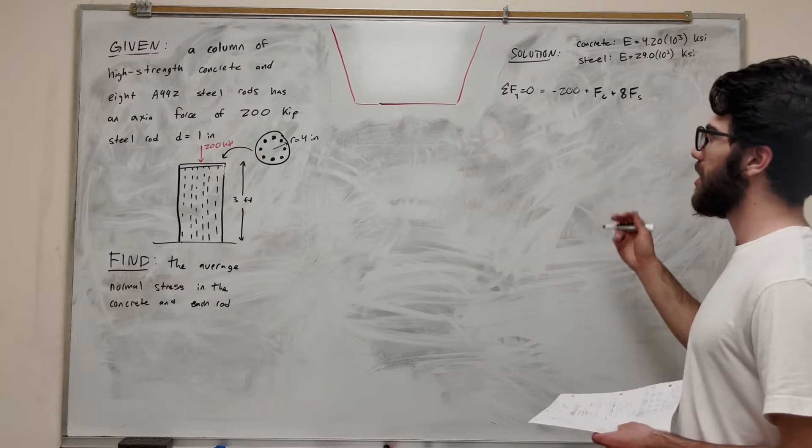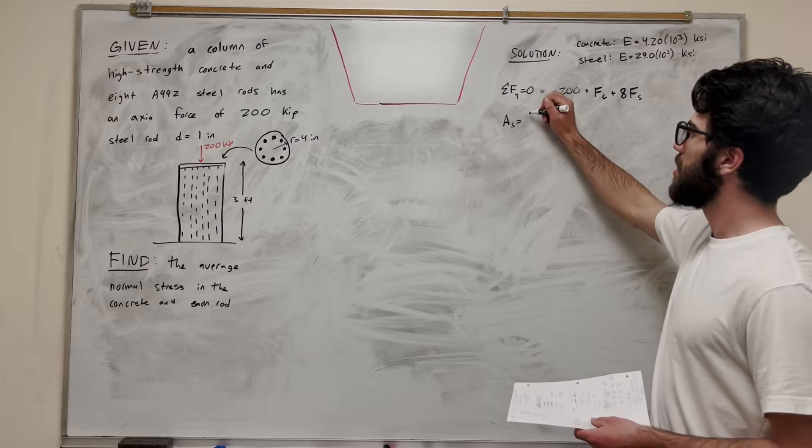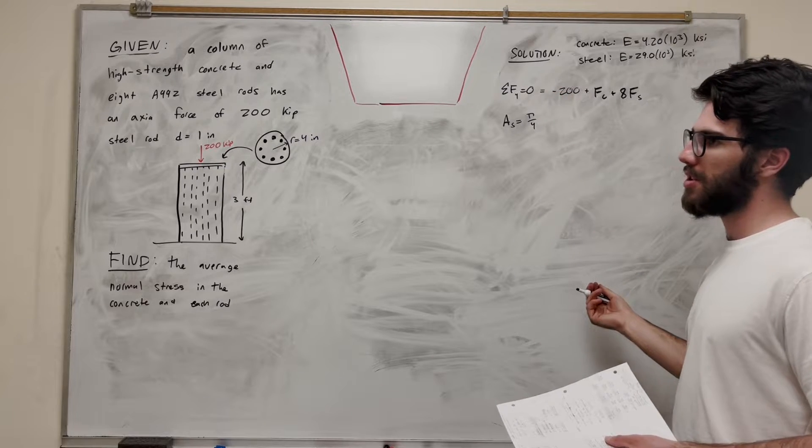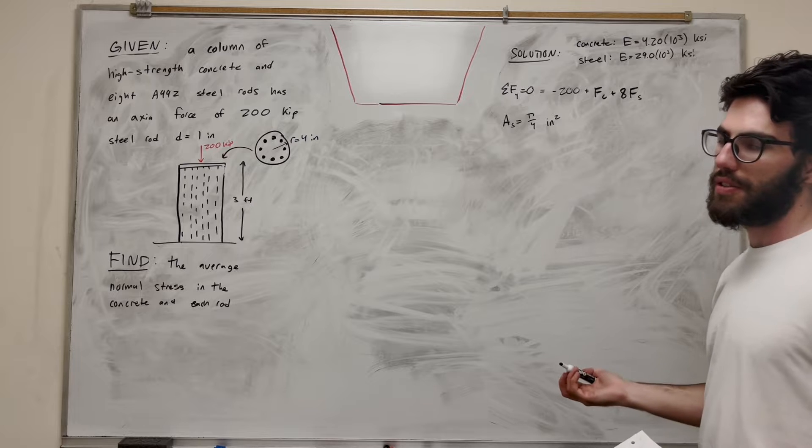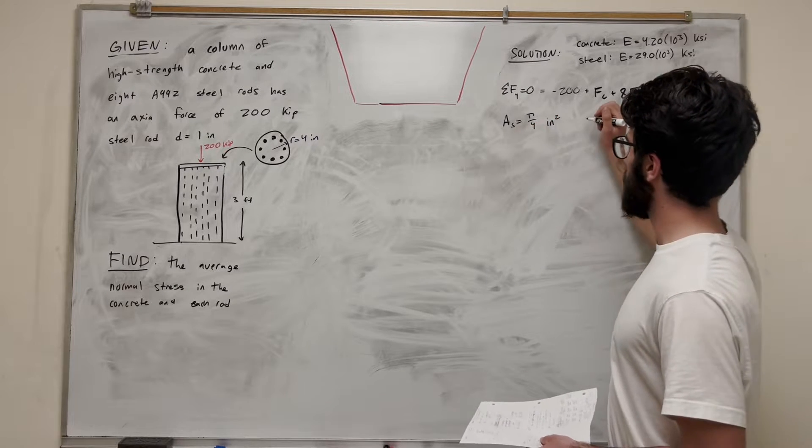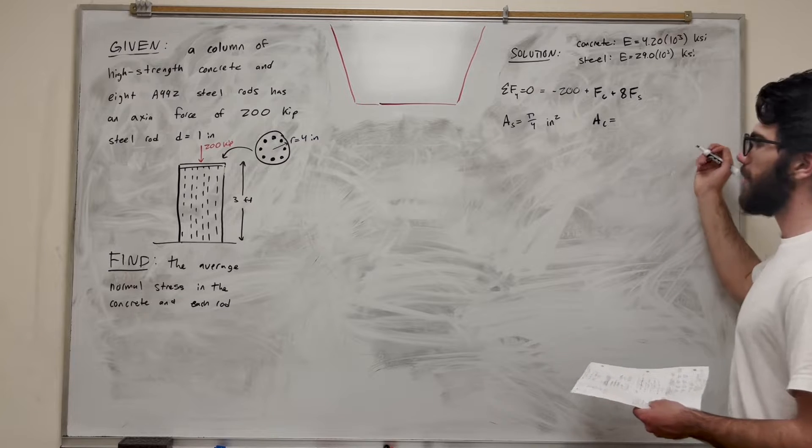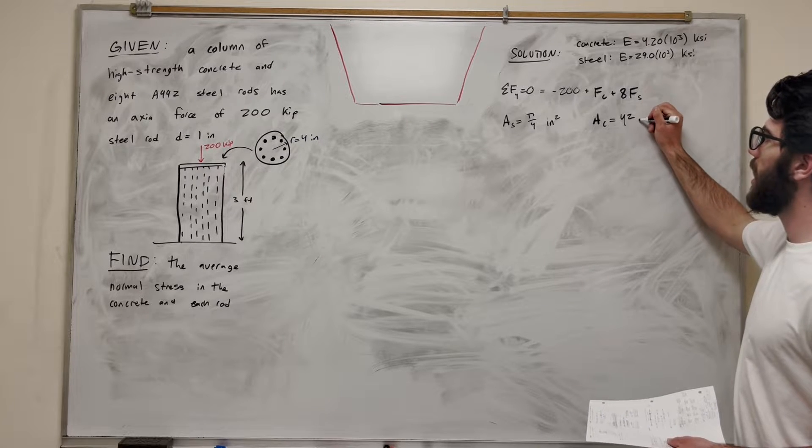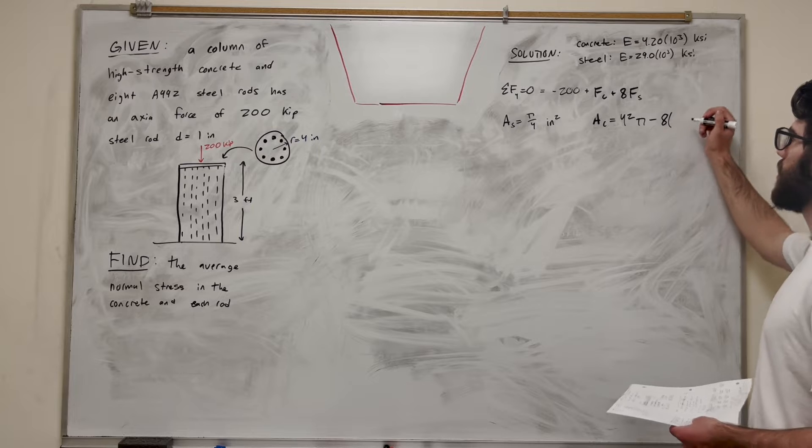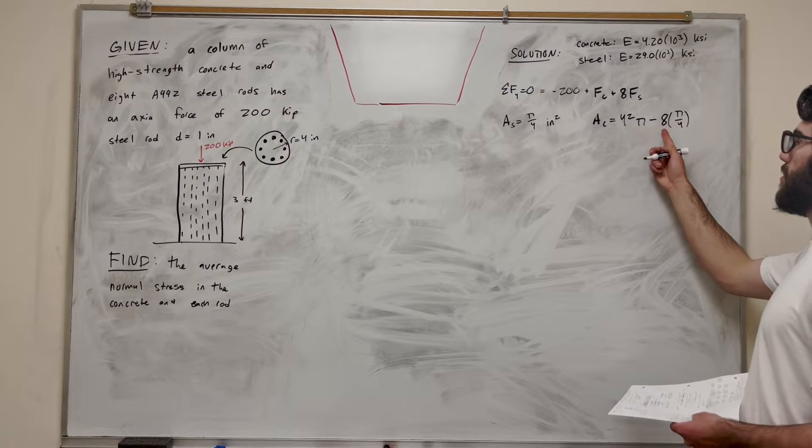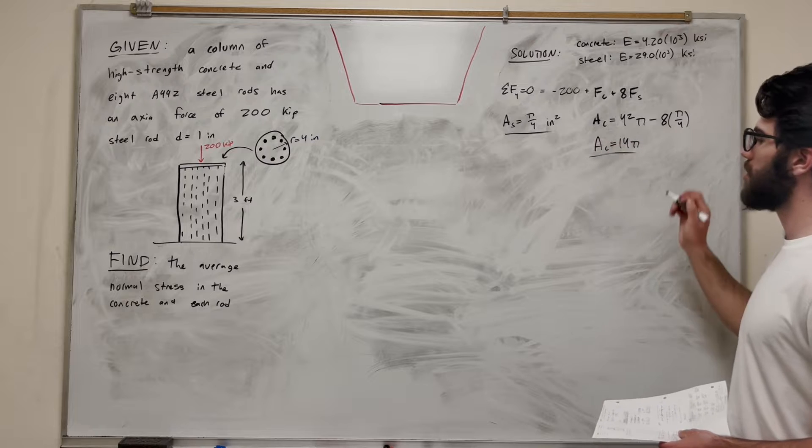So really quick, let's calculate the area for each one of these. So let's do the area of the steel rod. So we know that the radius or the diameter is an inch, so it's just going to be pi over four diameter squared, which is going to be one. So we know that the area of each steel rod is pi over four inches squared. So now if we want to find the area of the concrete, which we do, we're going to take, we know the radius of all of this is four inches, so we're going to take pi radius squared, so it's going to be four squared pi. But we need to subtract it from all the steel that's in there. So we know there's eight steel rods, so we're going to take minus eight, and each steel rod is pi over four inches squared. So we're going to get 16 minus two pi, and we're just going to get the area of the concrete as 14 pi. So those are two numbers we need.